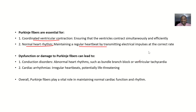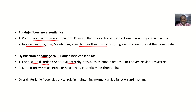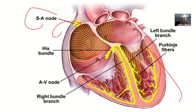From all this, you can imagine that if there's a problem with the Purkinje fibers, irregular things will happen in the heart. If there's a dysfunction or damage to the Purkinje fibers, it will result in conduction disorders — abnormal heart rhythms such as bundle branch block or ventricular tachycardia. Cardiac arrhythmias, like irregular heartbeats, which are potentially life-threatening, could also result. That's it for Purkinje fibers.